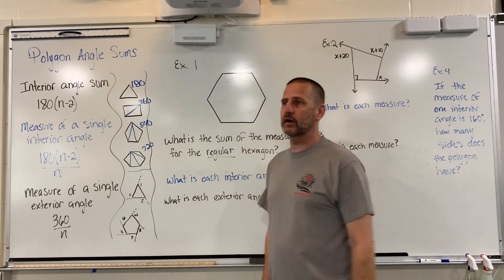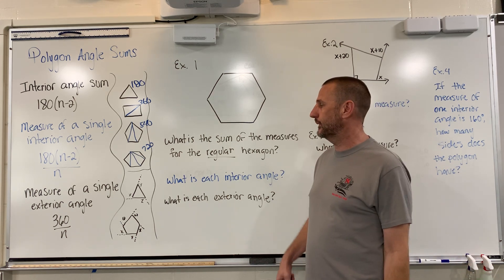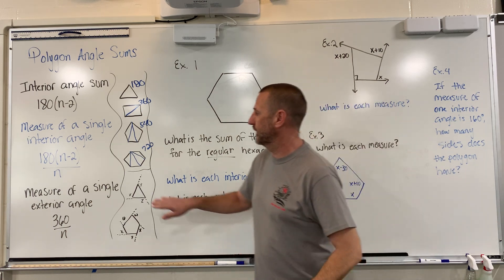So if I say, hey, it has 18 sides on it, well, 18 minus 2 is 16, and you times it by 180. All right, when it comes to exterior angles, oh, I'm sorry, I skipped right ahead, I forgot that.